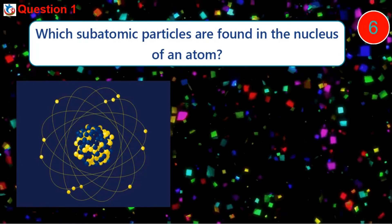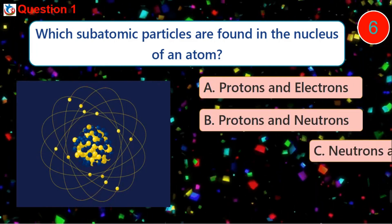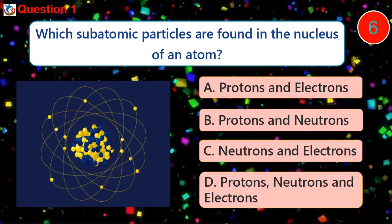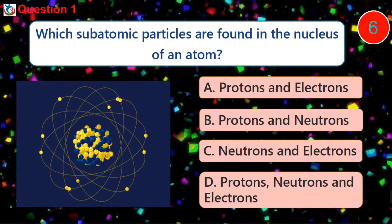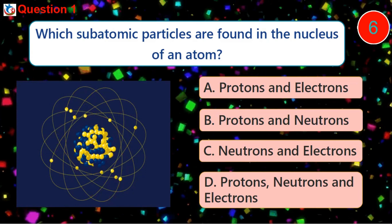Question 1. Which subatomic particles are found in the nucleus of an atom? A. Protons and electrons B. Protons and neutrons C. Neutrons and electrons D. Protons, neutrons and electrons.